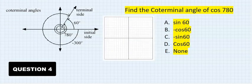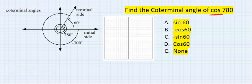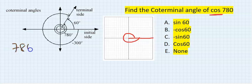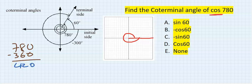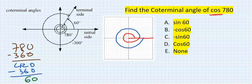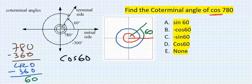Find the coterminal angle of cos 780. I will concentrate just on the cosine. Starting from the reference line, 780 minus 360 gives 420 — still greater than 360, so I go round again. Subtract 360 again; this time I have 60. So I go 60 and stop here. I check if cos 60 is the same as cos 780.